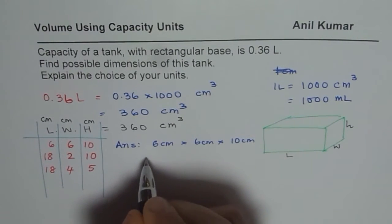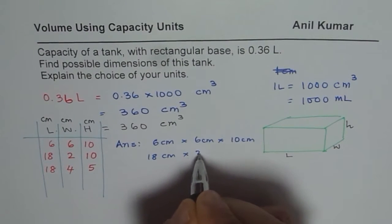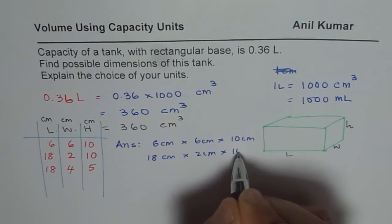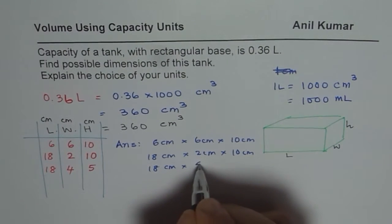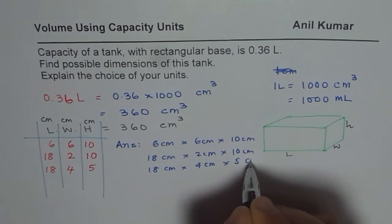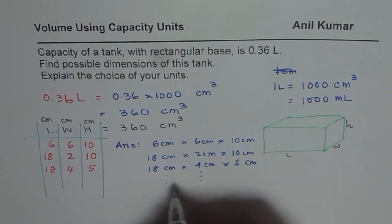That could be one possible solution. We have 18 centimeter by 2 centimeter by 10 centimeter. We could have 18 centimeter by 4 centimeter by 5 centimeter and so on.